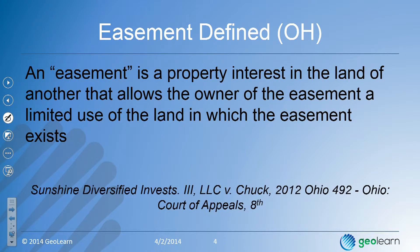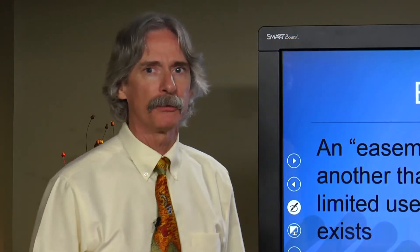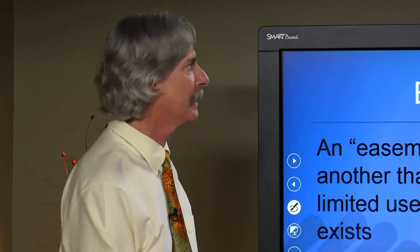Here's a definition out of Ohio: an easement is a property interest in the land of another that allows the owner of the easement a limited use in the land in which the easement exists. That says it a little bit longer, but it's quite similar to the very first definition we had.